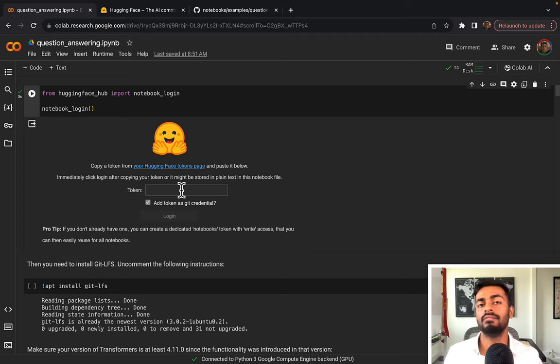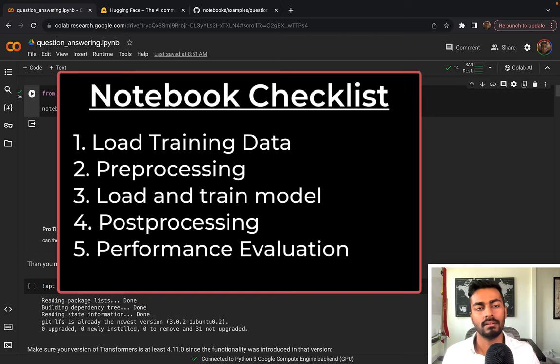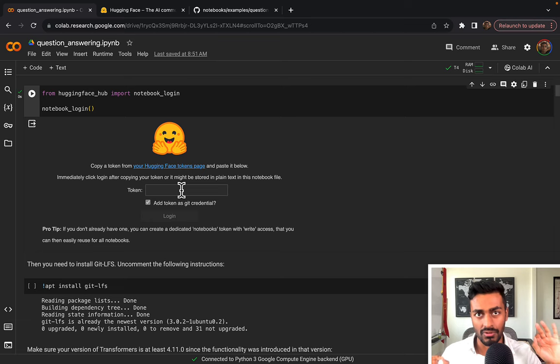In this pass, we are going to fine-tune BERT on the question answering dataset. This notebook describes a few processes. So first is loading of the training data. Then we're going to have to pre-process that training data so that it can be fed to a model. Then loading and training of the model itself. And then some post-processing to be able to interpret the results from the model. And then performance evaluation. So let's go through each.